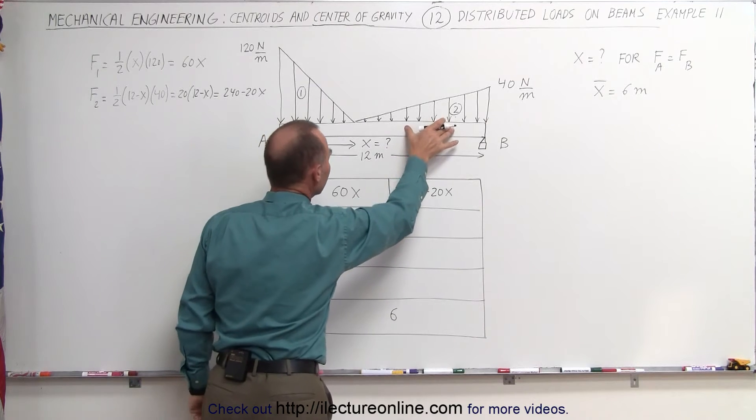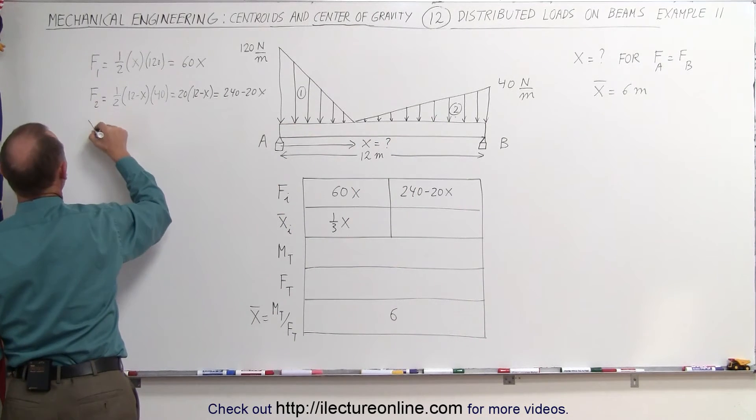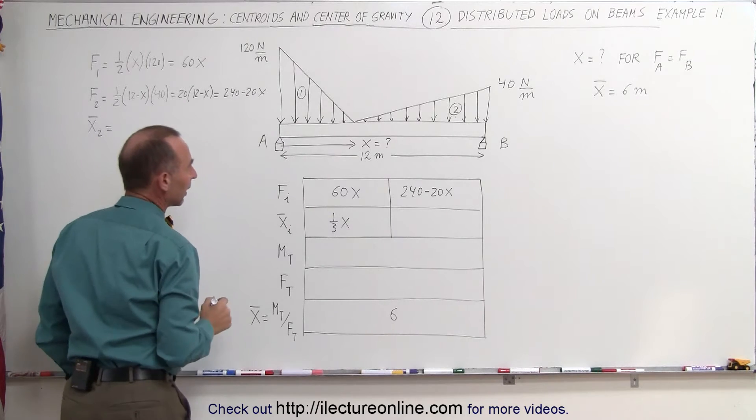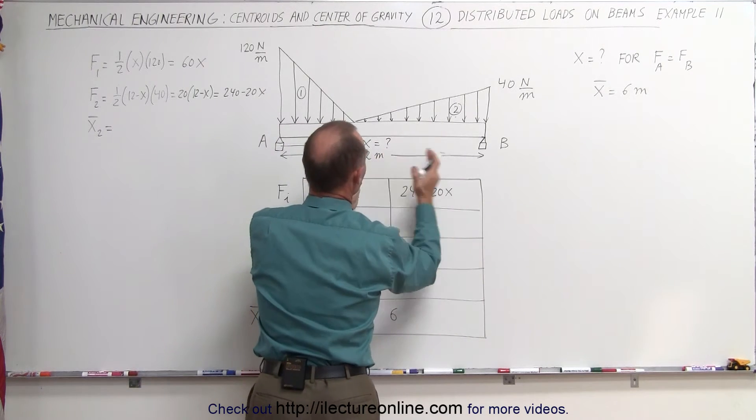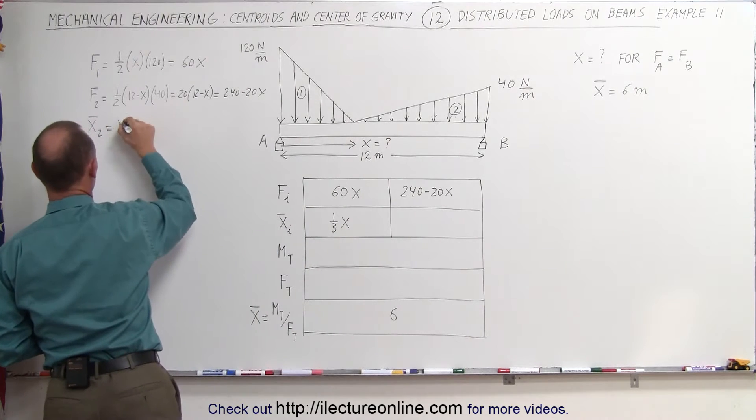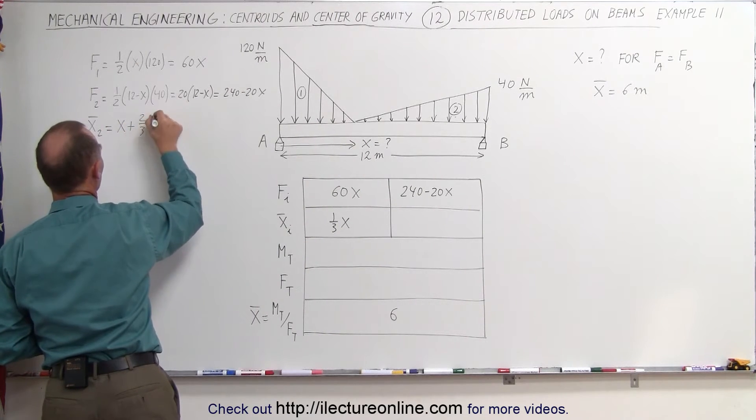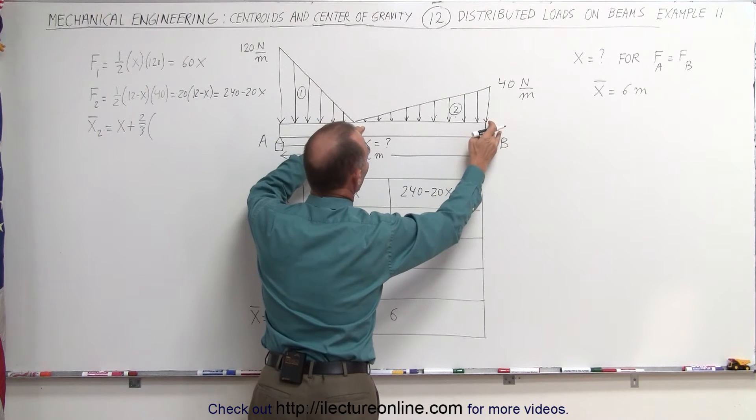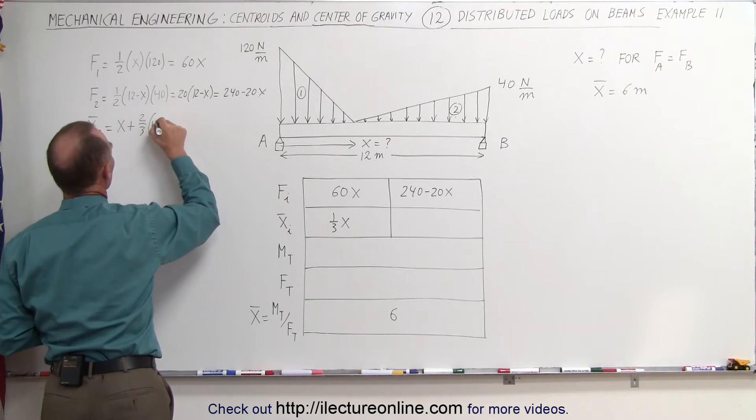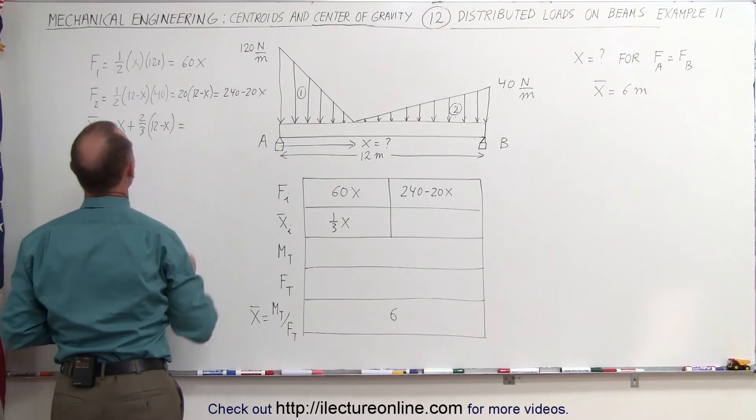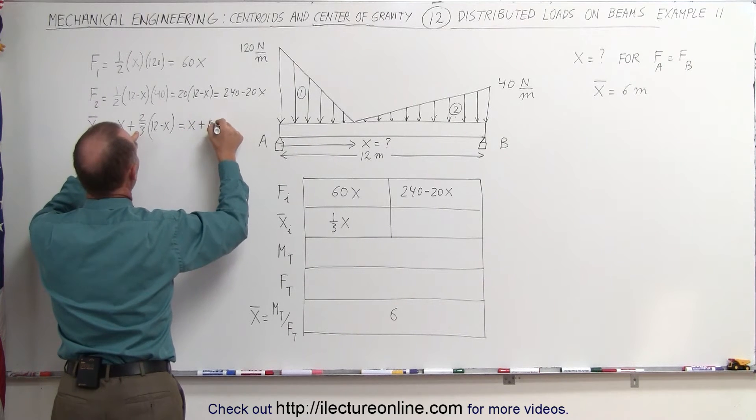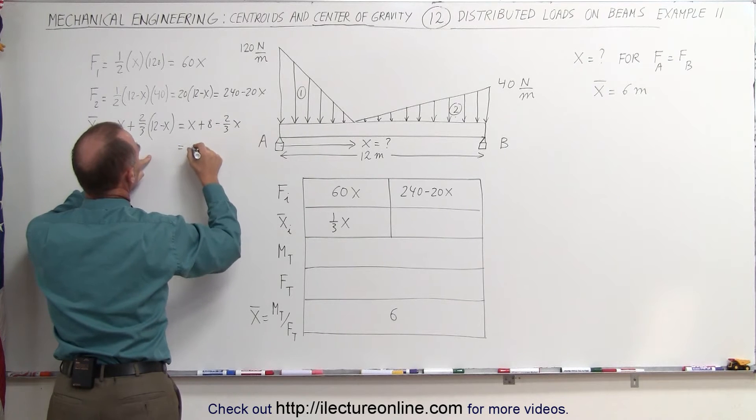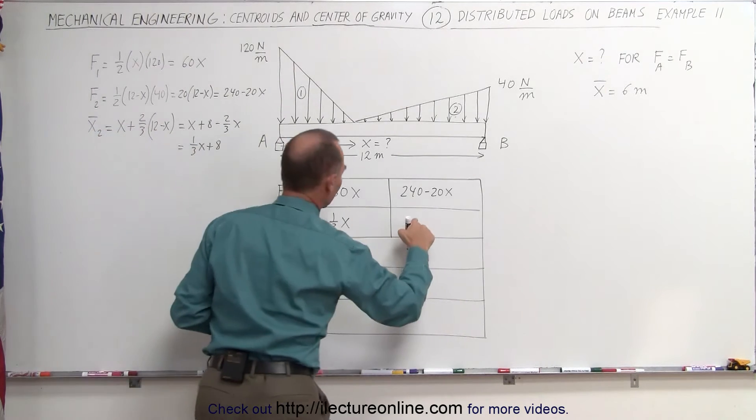Here it's a little trickier, we'll have to be careful. So x sub two is equal to, it'll be definitely x plus two-thirds the distance from there to there. So it'll be x plus two-thirds the distance from there to there, which is 12 minus x. That gives us x plus 8 minus two-thirds x, which is equal to one-third x plus 8. And that goes in here. One-third x plus 8.